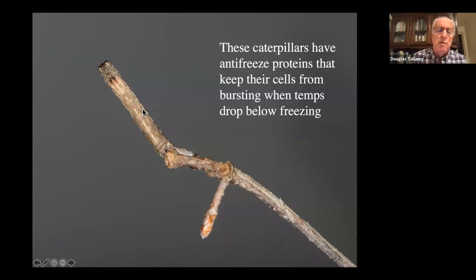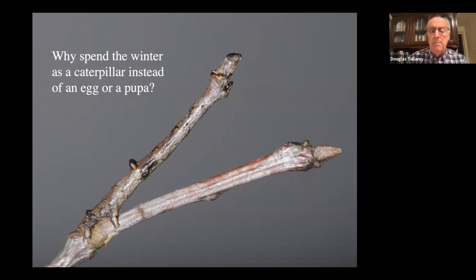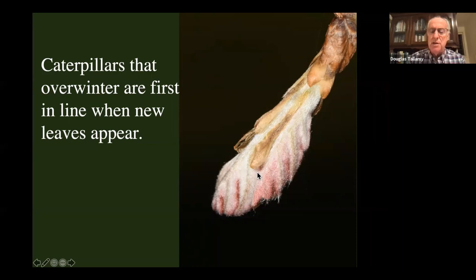Most insects overwinter as eggs, chrysalids, pupae, or cocoons — very few overwinter as larvae. The hypothesis is that these late-instar larvae, having almost completed their development, are ready to go when leaves pop out in spring. They can out-compete those tiny just-hatched caterpillars and get a jump on all that new foliage to complete their development.